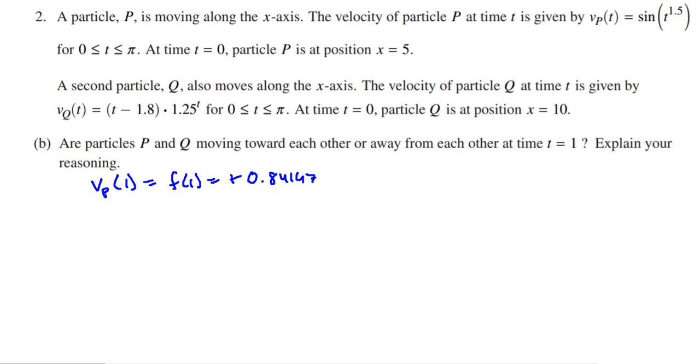That means the velocity of particle P is moving in the positive direction. And then I can find v of q, the velocity of q at 1, which is my g of 1, and I get negative 1. So the particle Q is moving in the negative direction. Now let's think of where these particles are at. We know at time equals 1, particle P is at a position of positive 5.37066. We found that from part A, and it's moving in the positive direction.